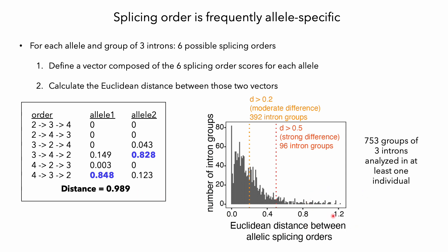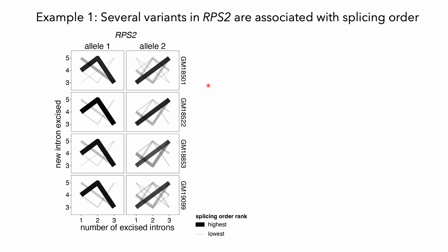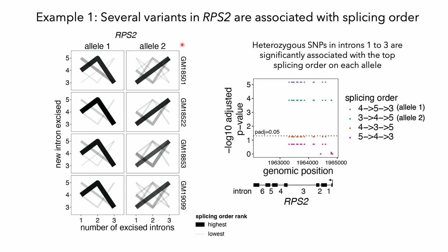Today I want to tell you about two examples for which we identified strong differences in splicing order between alleles. First, in the gene RPS2, we found that across four different individuals, on one allele intron 3 is removed after the two downstream introns, whereas on the other allele there's a splicing order reversal such that intron 3 is now removed prior to the two downstream introns. We next sought to identify SNPs associated with this splicing order. Here you can see a Manhattan plot where each dot represents one SNP, with their relative position in the RPS2 gene indicated below the plot. We found that a number of heterozygous SNPs in linkage disequilibrium were significantly associated with the two top splicing orders on each allele.